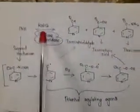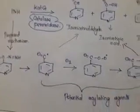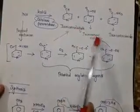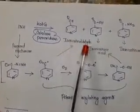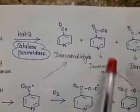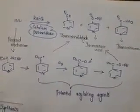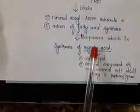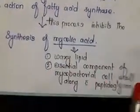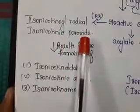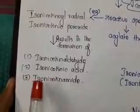Looking at the reaction: INH, by means of KatG (catalase peroxidase), produces potential acylating agents — the isonicotinoyl radical and isonicotinic peroxide. These are the reactive species, and finally we get three compounds: isonicotinaldehyde (aldehyde in fourth position), isonicotinic acid (acid in fourth position), and isonicotinamide (amide in fourth position). The enzyme used is catalase peroxidase, and the main action inhibited is synthesis of mycolic acid, an essential component of the mycobacterial cell wall along with peptidoglycan.